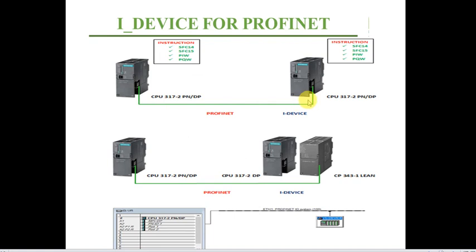For the fourth type — controller and device via Profinet — the two PLCs must have different IP addresses on the same network. The instructions are System Function 40 and System Function 50, or input/output word. If one PLC doesn't have a Profibus port, a communication module is used, and the device is placed under the controller's network in the hardware configuration.